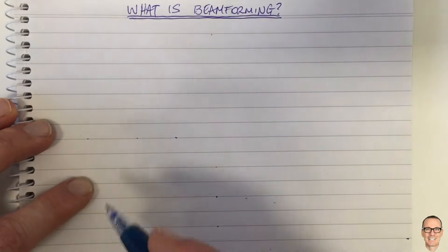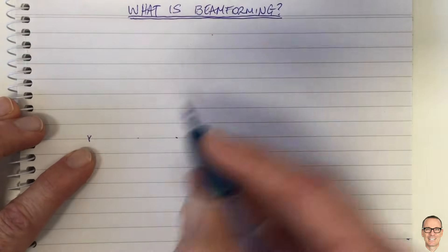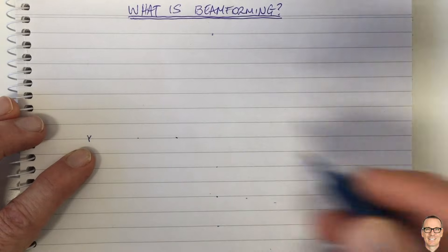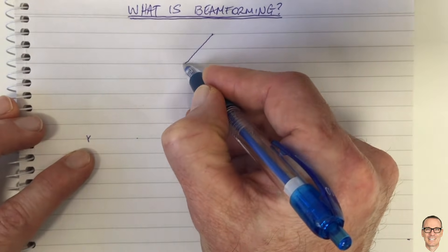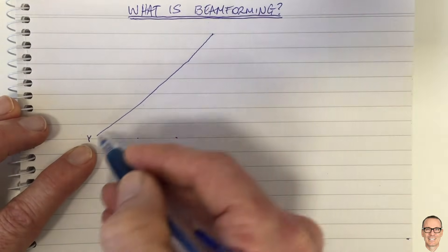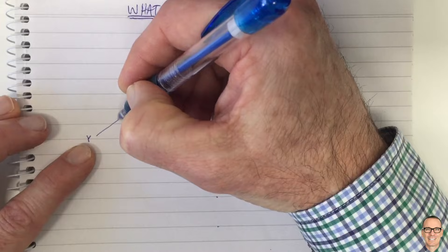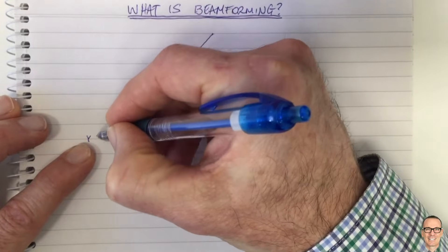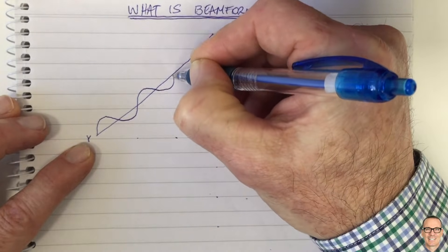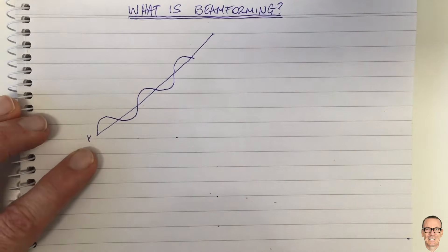Let's understand beamforming. I like to think of it from the receiver perspective. Let's think of a receiving antenna and a source over here sending us a signal — it could be a sonar signal, a radar signal, or a wireless communication signal. This is the path coming in on the straight line to our receiver. A waveform is oscillating in a sine wave as it comes towards us, because it's at a certain frequency coming from that source direction.